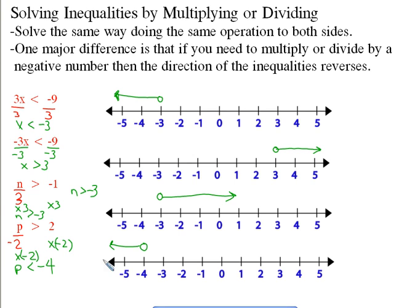It's really important to check those answers and inequalities just to make sure that you've got the arrows going in the right way. The dots are easy. Remember, if this was a problem like this, then I would have to color in that dot because it would be p divided by negative 2 is greater than or equal to 2. That's all there is to solving inequalities by multiplying and dividing.